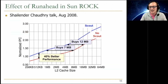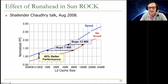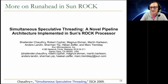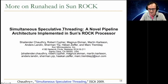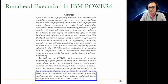I'll mention briefly other works that have validated our results. Sharlanger Chaldry's talk from 2008 evaluates what they called hardware scouting on their processors. In their in-order processor, similarly configured to ours, they showed very similar results — about 40% better performance — and basically showed that instead of putting more cache, you can do run-ahead. IBM Power 6 also had a load look-ahead which is similar, and that paper evaluates run-ahead plus other prefetching mechanisms and finds positive results as well.